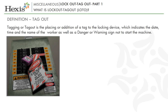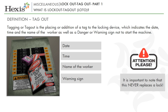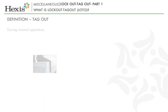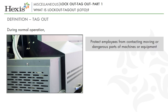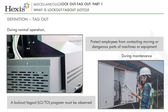Tagging or tagout is the placing or addition of a tag to the locking device, which indicates the date, time and the name of the worker as well as a danger or warning sign not to start the machine. However, it is important to note that this never replaces a lock. Lockout and tagout together are also known as LOTO. During normal operation, guards, cover plates, panels, etc. must be in place to protect employees from contacting moving or dangerous parts of machines or equipment that could lead to entanglement, electric shock, amputation, laceration, pinching, pinning, crushing or other injury. However, it may be necessary to remove or deactivate guards during maintenance and repair operations. In these situations, a lockout-tagout program must be observed.